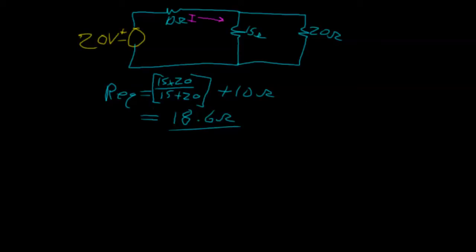So finding the current from that equivalent resistance, we have 20 volts over 18.6 ohms, which is 1.08 amps.